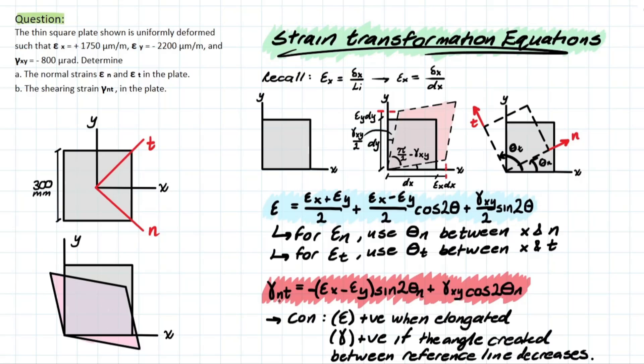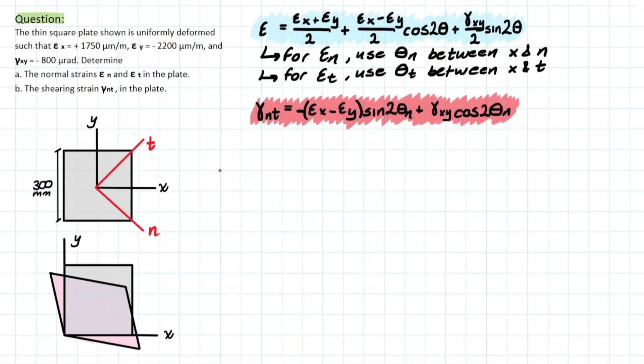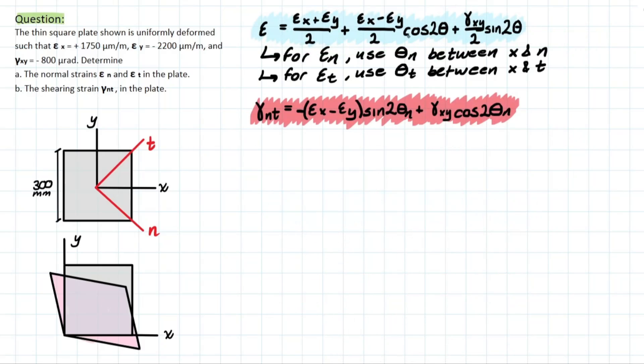So now we have that visual, we can hop in the problem and identify what variables we need to solve. All right, so now we can hop into solving the problem. The first thing we need to do is identify these theta values. We have the angle between x and n for theta n, and the angle between x and t for theta t.